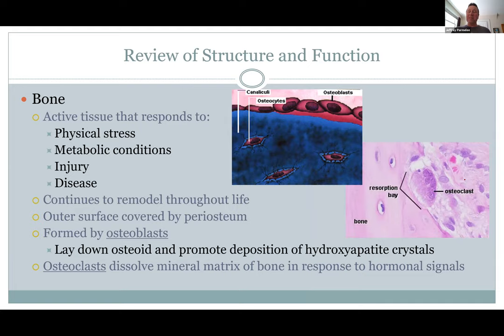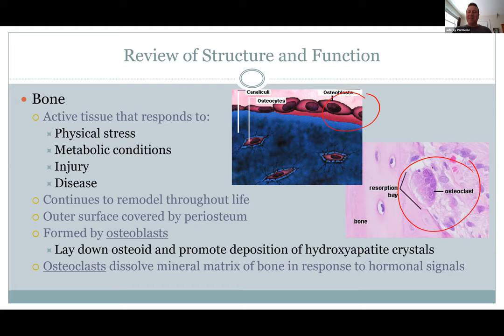Bone is really an active tissue that reacts to your metabolism and electrolyte needs — how much calcium and phosphorus you need. Diseases can affect it. There's a balance of bone building and bone breaking down. Osteoblasts build bone; osteoclasts break down bone. They're listening to hormones. This balance works pretty well, but in old age the scale tips a little bit towards the clasts, and you end up slowly getting lower bone density — osteoporosis.